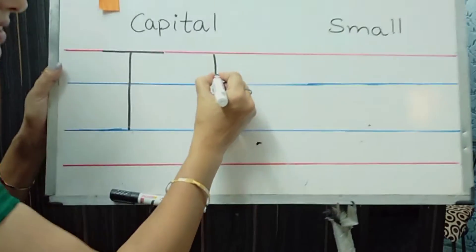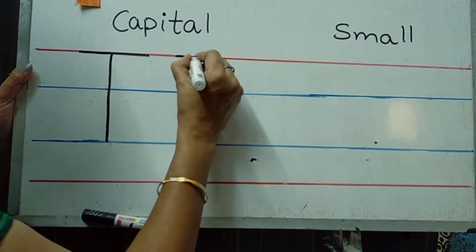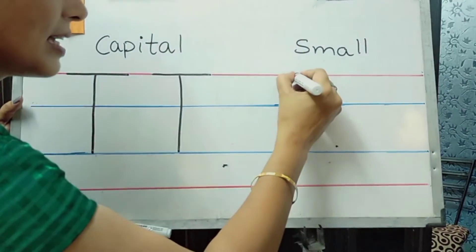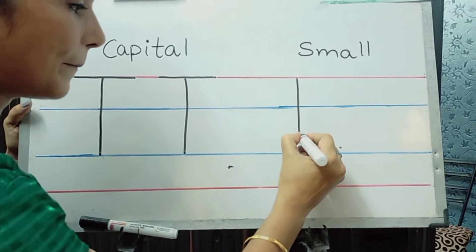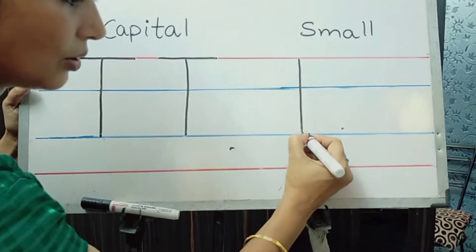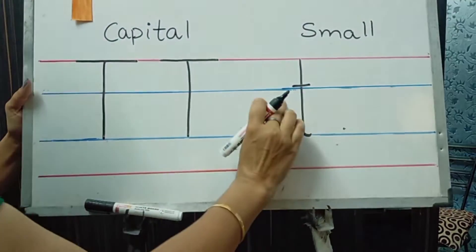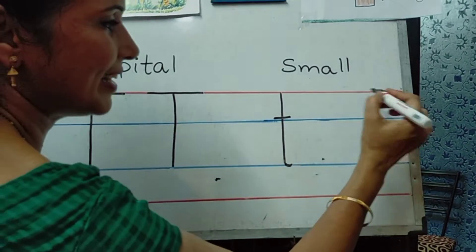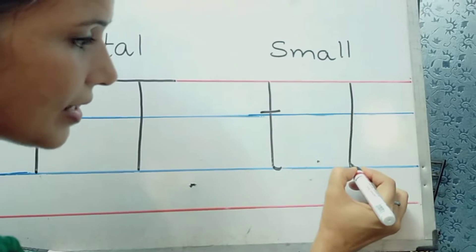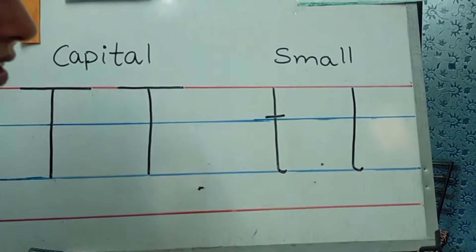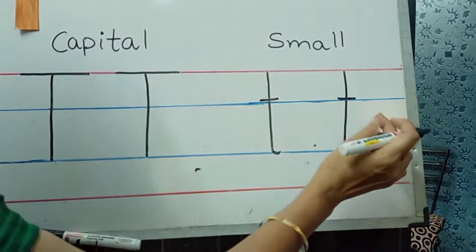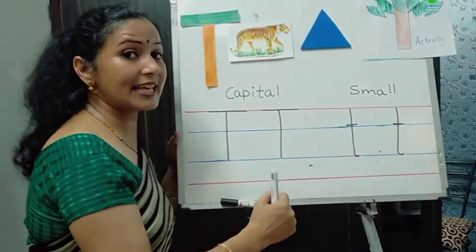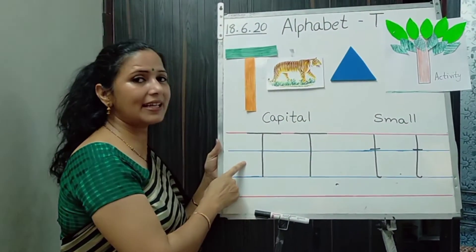One more time — standing line, and we will join a slip line. Capital letter T. Now, small letter — simple. Standing line, a small curve, and we will draw a slip line. Small letter T.